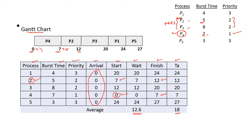Process 2 execution is completed. After that, process 3 will get executed. Process 3 has a starting time of 12, and the finish time is starting time plus burst time — that is 12 plus 8, which is equal to 20. So process 3 is also completed.